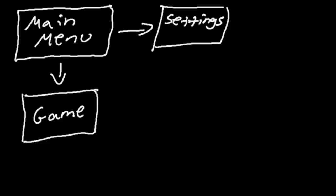You can add way more than this — this is just a very basic example. But as you can see, a game is made up of multiple parts. We have a main menu part, a settings part, and the actual game part. We call these states, mainly game states in game programming. So the main menu is a state, the settings menu is a state, and the game is a state.